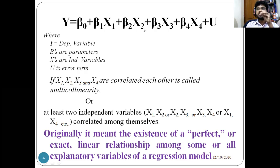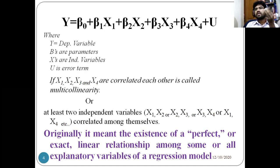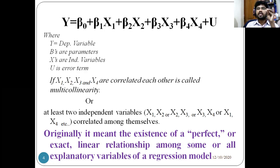If x₁ is correlated with x₂, that is called multicollinearity. Or if x₂ is correlated with x₃, we get a multicollinearity problem. Or if x₃ is correlated with x₄, that is also multicollinearity. Among the independent variables x₁, x₂, x₃, x₄, if the correlation between them is high, that is called multicollinearity.